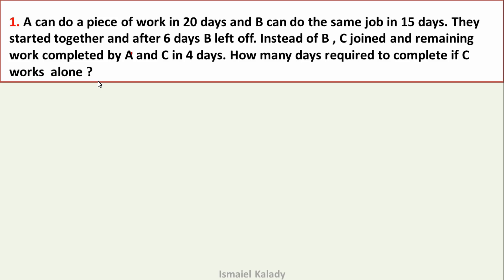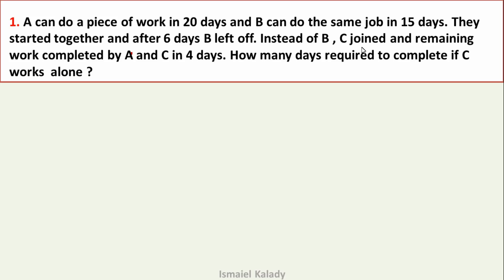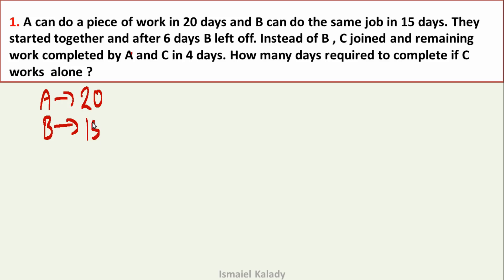A can do the work in 20 days and B in 15 days. After 6 days B left, and A and C completed the remaining work in 4 days. We need to find LCM of 20 and 15. A's efficiency is 20, B's efficiency is 15. We complete LCM and efficiency as discussed in the previous videos.